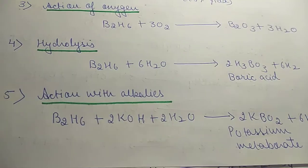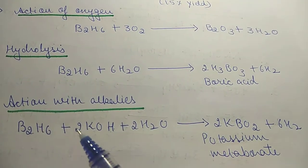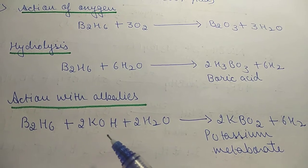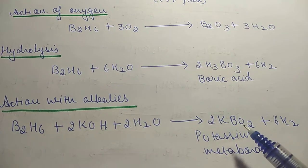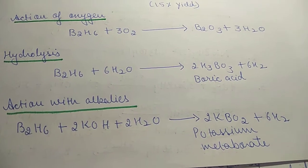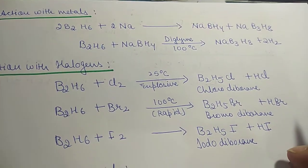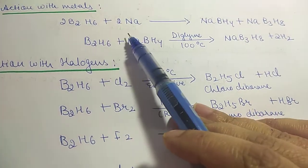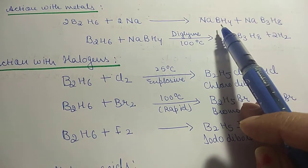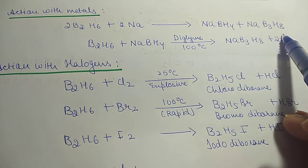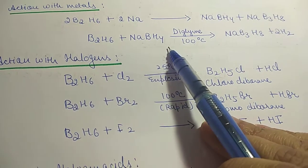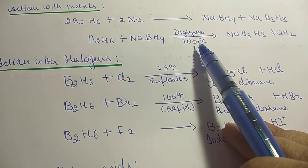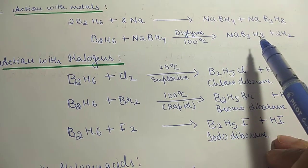Action with alkalis: B2H6 reacts with potassium hydroxide plus water to give potassium metaborate KBO2 plus hydrogen. Action with metals: B2H6 plus sodium reacts to give sodium borohydride NaBH4 plus NaB3H8. Also, B2H6 plus NaBH4 in the presence of diglyme at 100 degrees Celsius gives NaB3H8 plus 2 hydrogen.